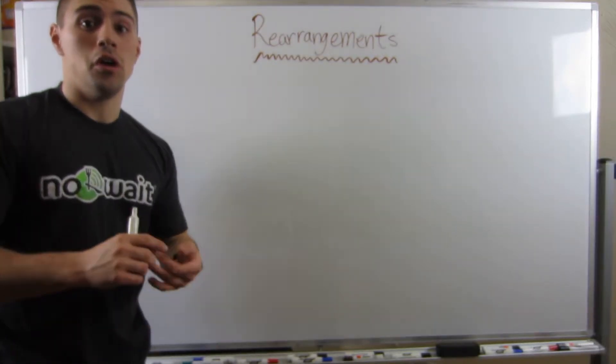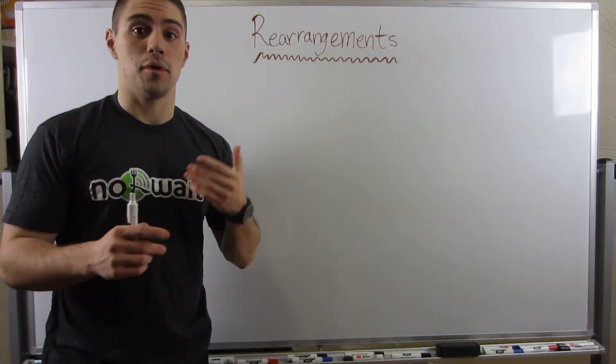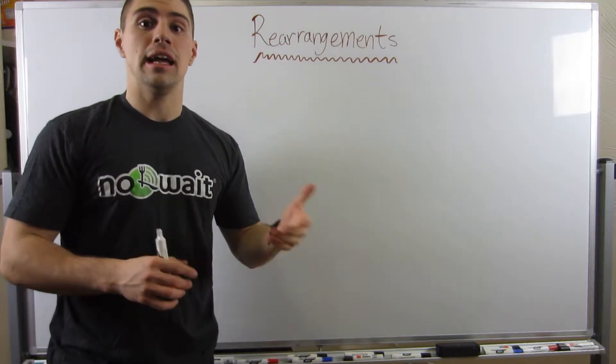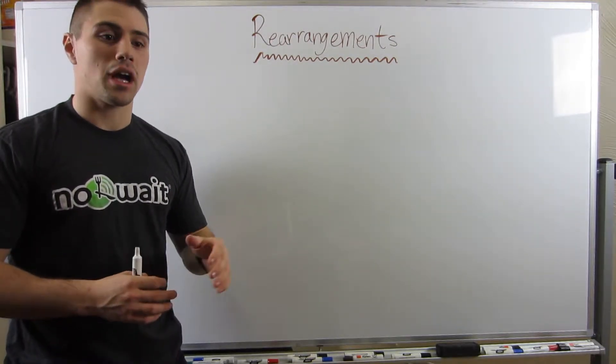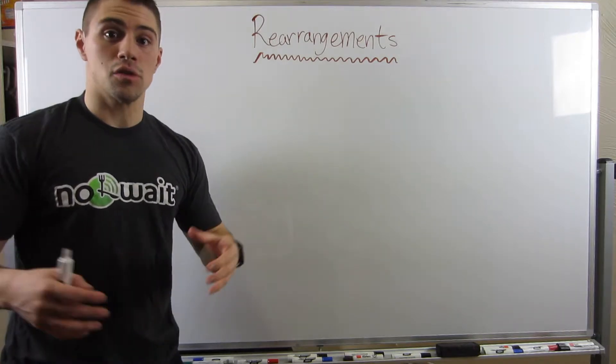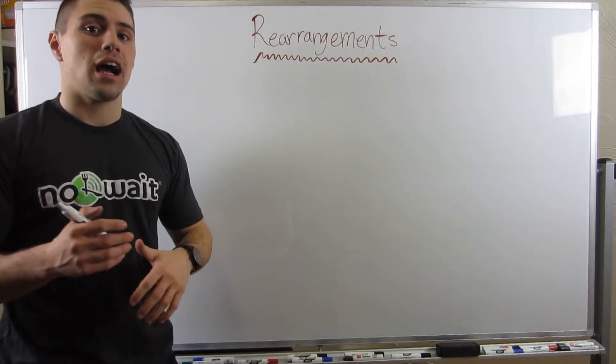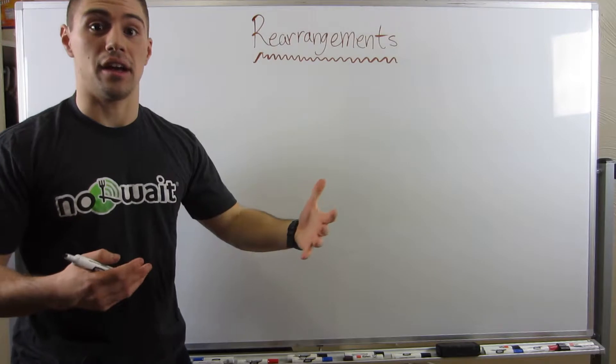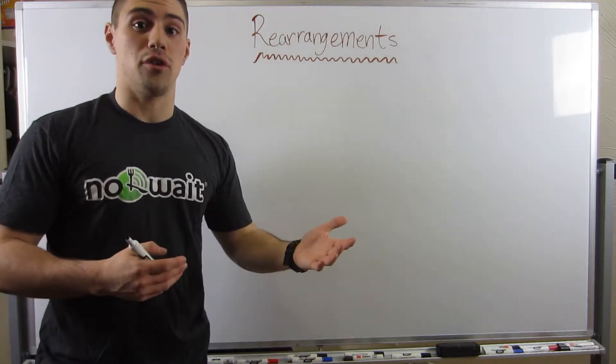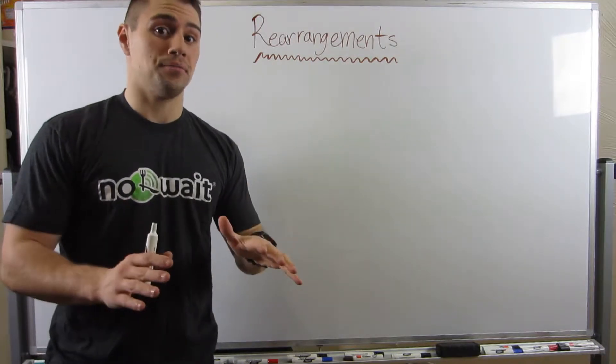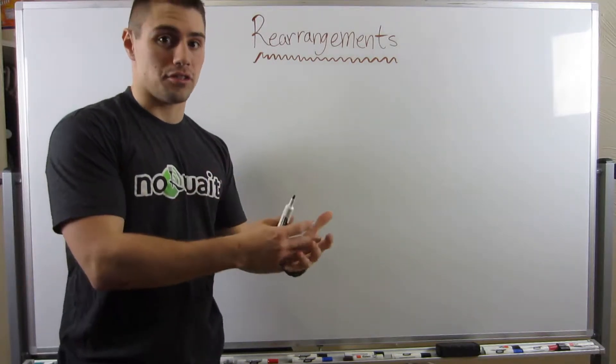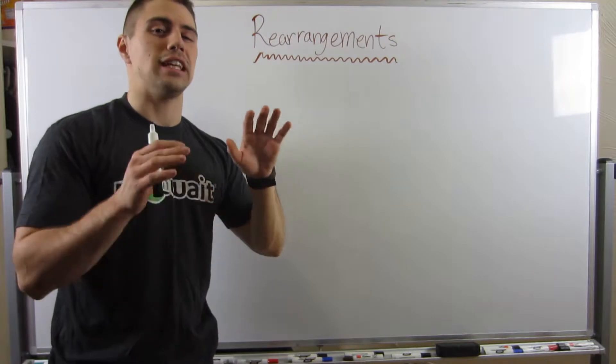Now that we've navigated our way through both substitution reactions, SN2 and SN1, and the same thing with elimination reactions, E2 and E1, and we've also kind of dipped our feet into the world of alcohols, now it's time to see what else is out there.